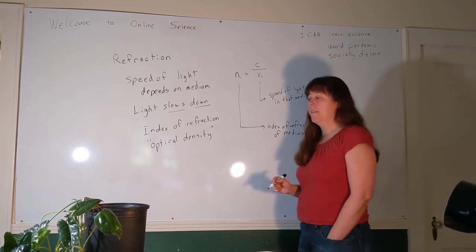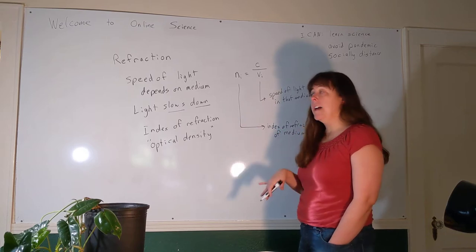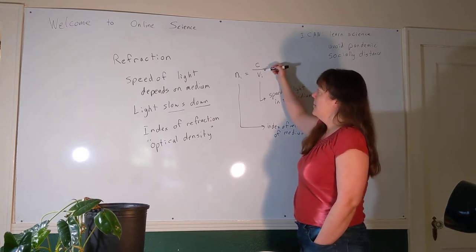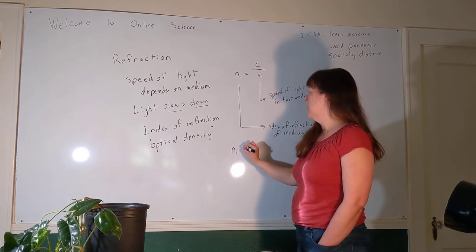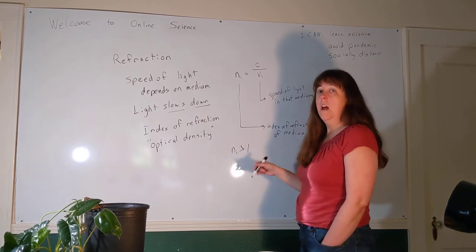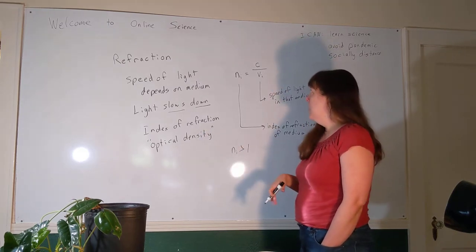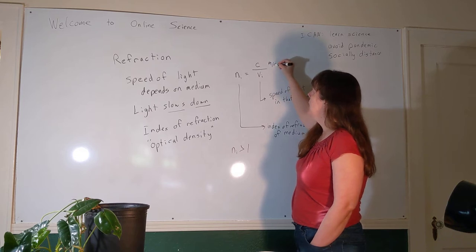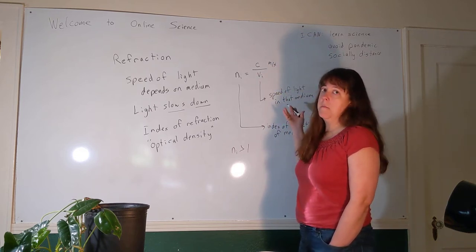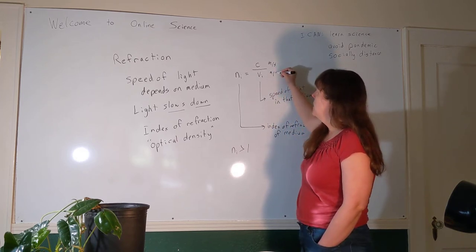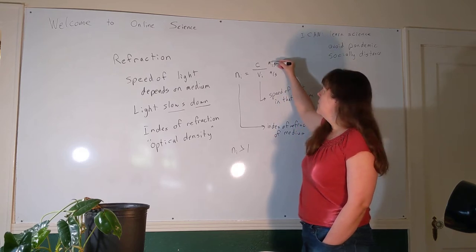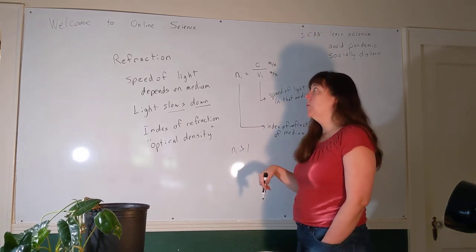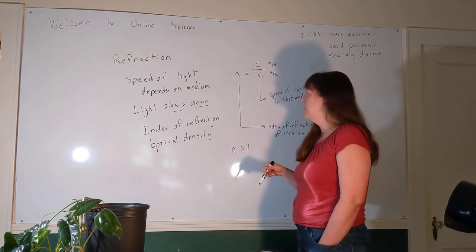A couple things to note about the index of refraction. I said earlier that light is going to slow down in a medium that's not a vacuum, which means this speed is always going to be smaller than c. If we have a bigger number divided by a smaller number, that tells us that the index of refraction is going to be greater than one for any kind of substance, and the more greater than one it is, the more it slows it down. The other thing: what are the units of the speed of light? Meters per second. And what about the units for the speed of light in any other medium? Still meters per second. So the units cancel, and the index of refraction is actually unitless.